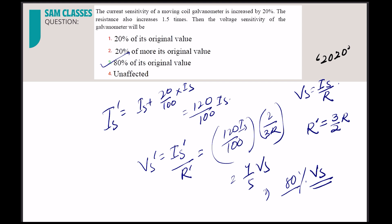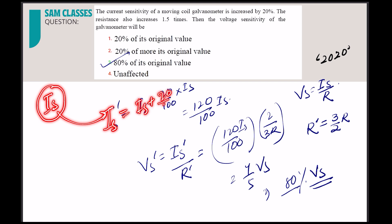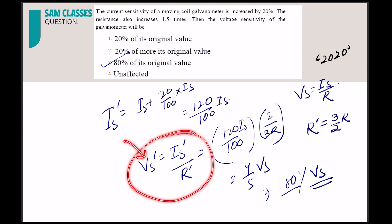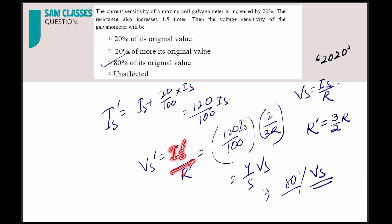To recap: current sensitivity increased by 20 percent means the new value is 120/100 of the original. Voltage sensitivity equals current sensitivity divided by resistance. New resistance is 3/2 times the old one. Substituting gives 80 percent of the original voltage sensitivity. Very simple question.